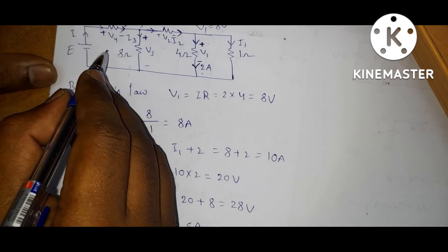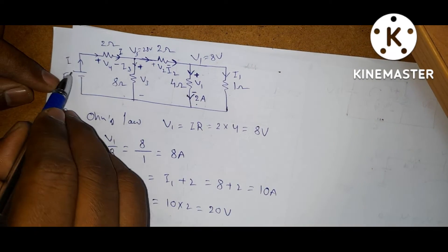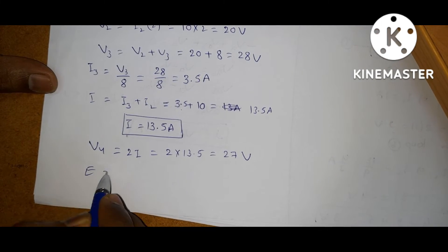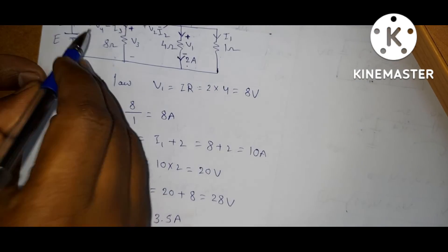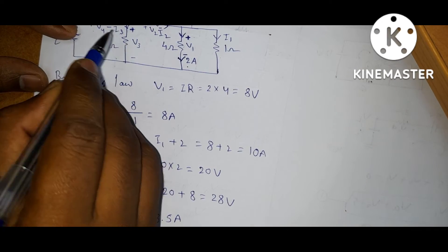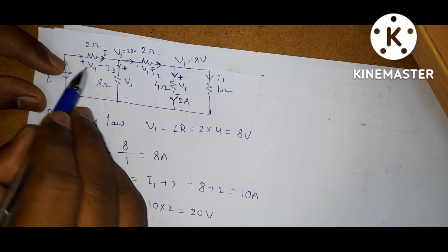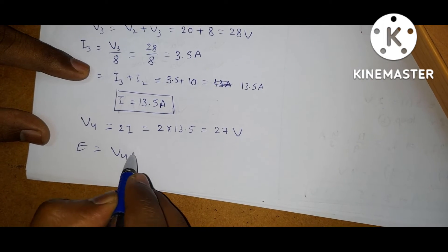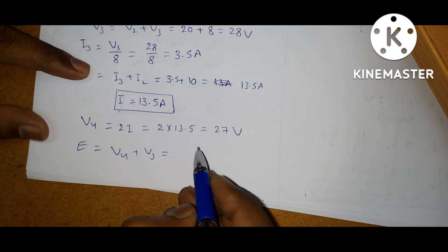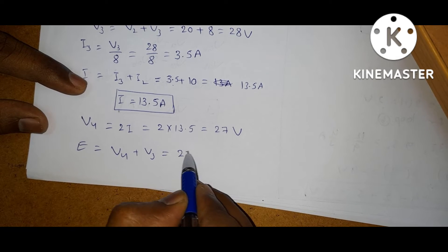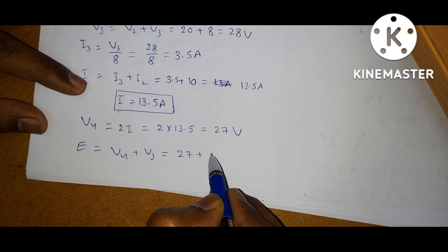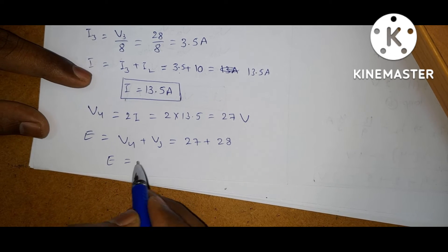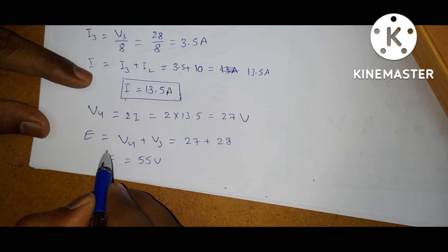Now by KVL, what is E? E is equal to V4 plus V3. We got V4 is 27 volts and V3 is 28 volts. So E is equal to 55 volts.